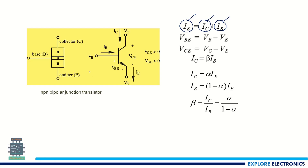The voltage between base and emitter is written as VBE = VB minus VE, and the voltage between collector and emitter is VCE = VC minus VE. There is always a relationship between the currents represented by two parameters alpha and beta. IC equals beta times IB, and IC equals alpha times IE. Rearranging these, beta can be written in terms of alpha as: beta equals alpha divided by (1 minus alpha).